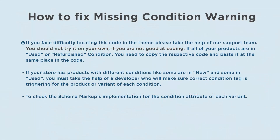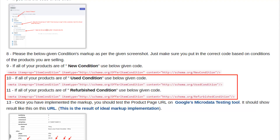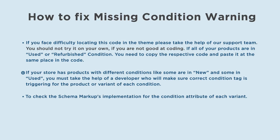If you face difficulty locating this code in the theme, please take the help of our support team. You should not try it on your own if you are not good at coding. If all of your products are in used or refurbished condition, copy the respective code and paste it at the same place. If your store has products with different conditions — some new and some used — you must take the help of a developer who will make sure the correct condition tag is triggering for the product or variant of each condition.